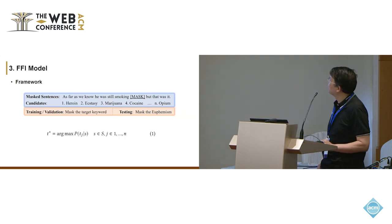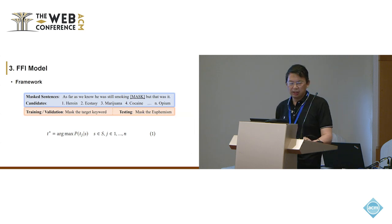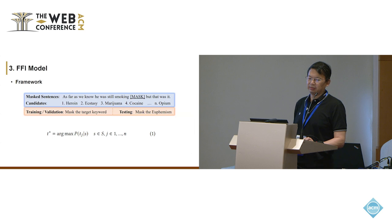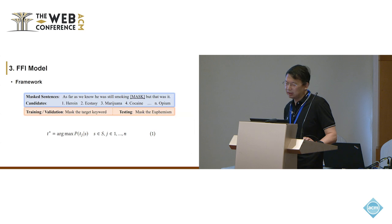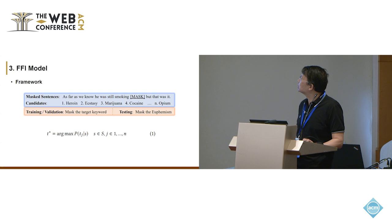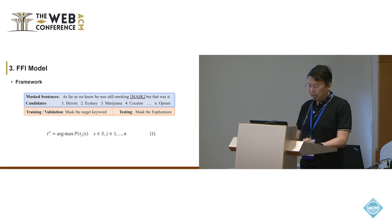To address the above issues, we first formulate euphemism identification as a cloze test. This is the text sentence, where mask means the blank of the sentence. The goal is to find the best candidate from the keyword candidate set that fits the sentence. There are differences during training versus testing. During training, the mask is the target keyword, and output is also the target keyword. But when we have testing, the mask is the euphemism, and we want to get the output as the target keyword.